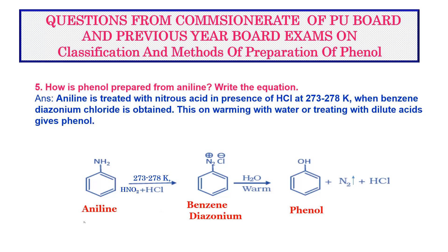We have to start the process from aniline only. Aniline is treated with nitrous acid in presence of HCl at about 273 to 278 Kelvin, wherein aniline is converted into benzene diazonium chloride. Benzene diazonium chloride on warming with water or dilute acid will give phenol. Writing the equation along with this statement will fetch complete two marks.